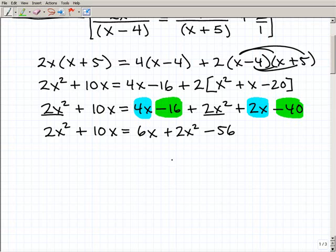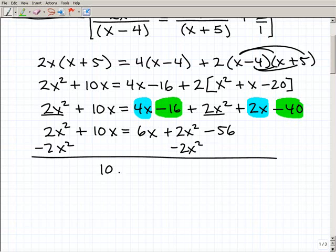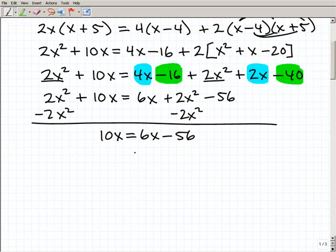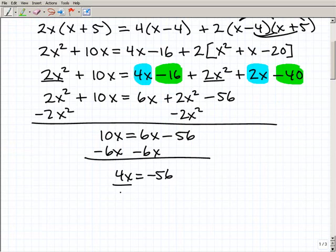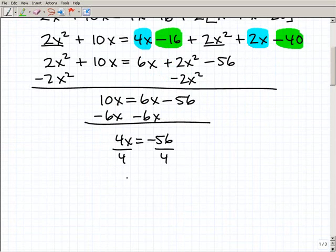Now what I want to start doing is getting all my variables to the left-hand side and all my numbers to the right-hand side. Look what's going to happen to the 2x² - I can subtract 2x² from both sides of the equation. They're going to go away. So let's just go ahead and do that now. My equation now is 10x = 6x - 56. And now this is getting to be really easy. I'm going to subtract 6x from both sides of the equation. I get 4x = -56. And then last but not least, I need to divide both sides of the equation by 4. And I get x = -14.